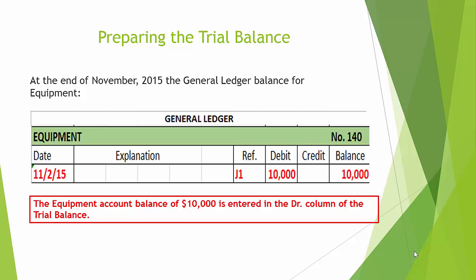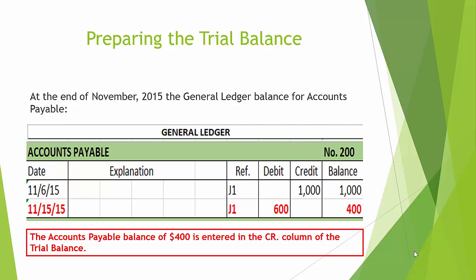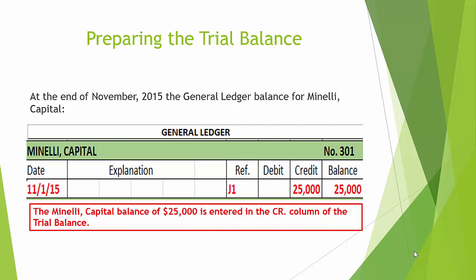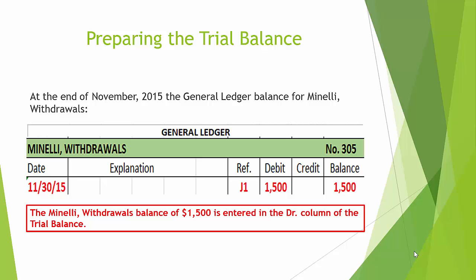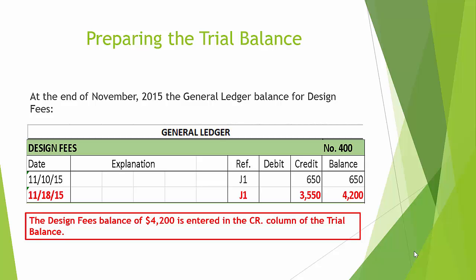At the end of November 2015, the general ledger balance for equipment is $400 credit — this amount should be entered in the credit column. The balance for Minnelli Capital is $25,000 credit, entered in the credit column. The balance for Minnelli withdrawal is $1,500 debit, entered in the debit column. The balance for Design Fees is $4,200 credit, entered in the credit column.